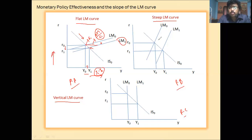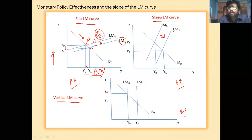In panel B, the LM curve is steeper — the demand for money is less interest elastic, less sensitive to the interest rate. Here, with an increase in money supply, the LM curve shifts from LM zero to LM one. Income increases from Y0 to Y1 and the rate of interest falls from R0 to R1.